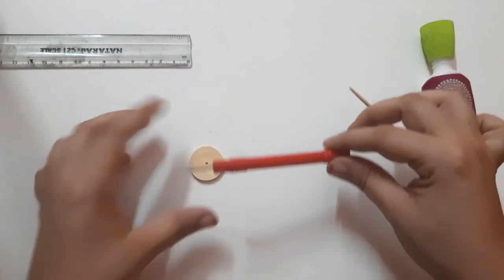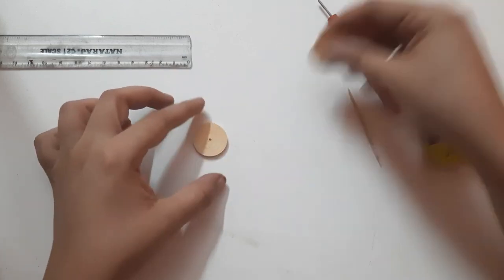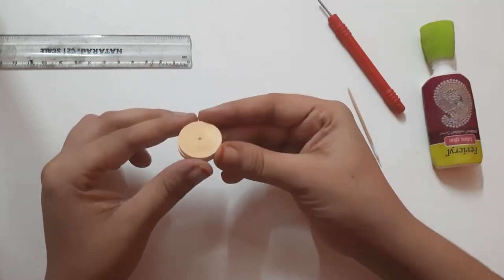Roll the quilling needle over the tight coil to get the flat surface. Both the coils should be of same length.